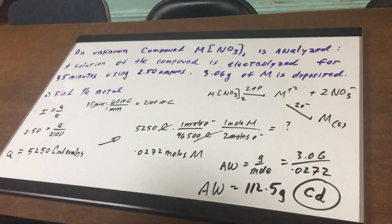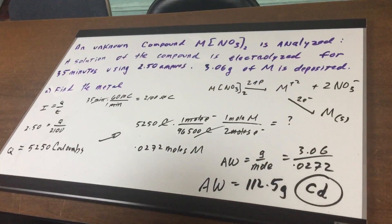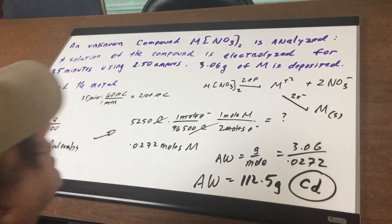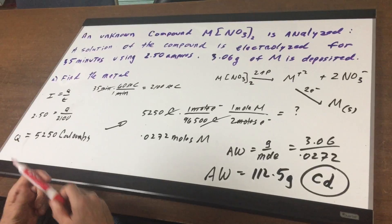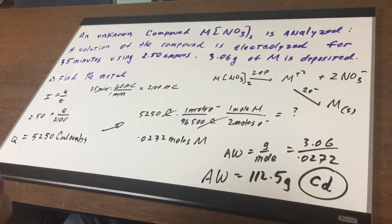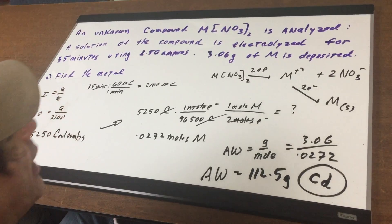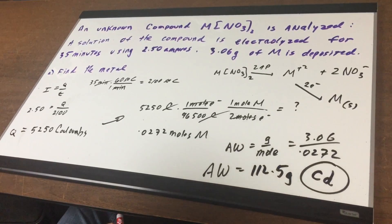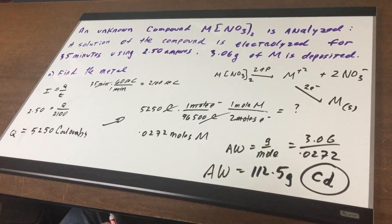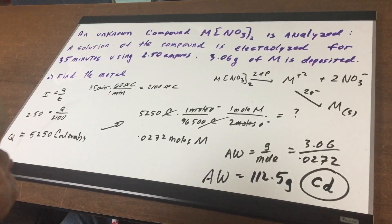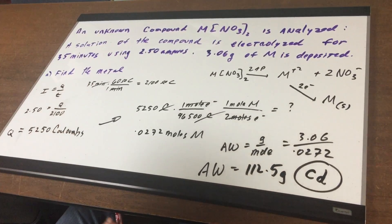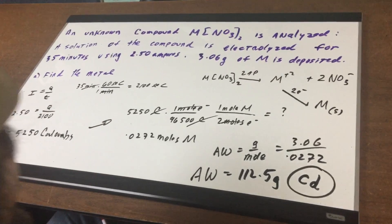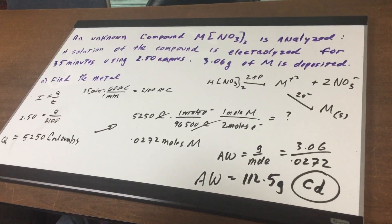In this problem we have an unknown compound MNO3, so we have a nitrate and it's going to be analyzed. A solution of the compound is electrolyzed, meaning it underwent electrolysis for 35 minutes using 2.5 amperes. 3.06 grams of the metal is then deposited and what I want to do is to find the metal. Where would I even start this problem?